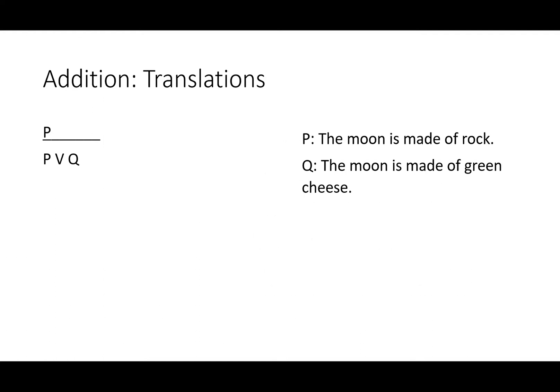Let's use some translations to see why addition works like it does. The moon is made of rock will be P, and the moon is made of green cheese will be Q. Well, the moon is made of rock, therefore either the moon is made of rock or the moon is made of green cheese. That's a pretty unusual way to use 'or' in regular English, with something we know is true and something we know is false, but it's not a lie.